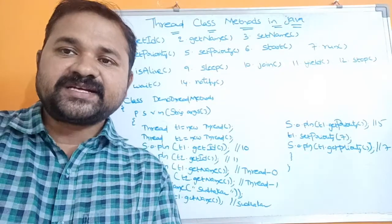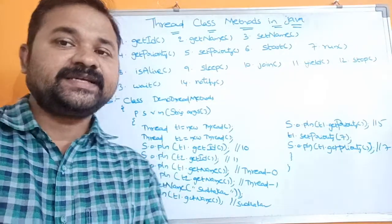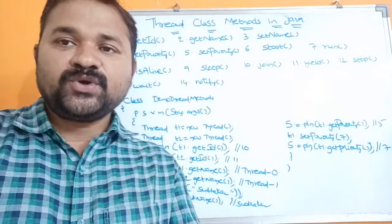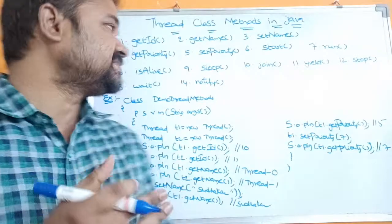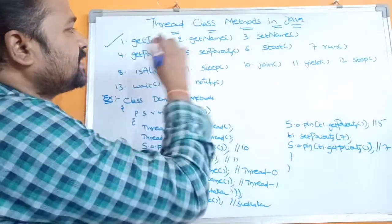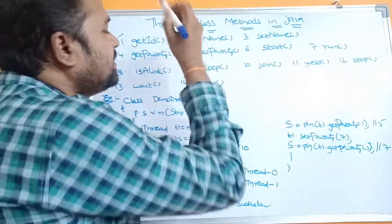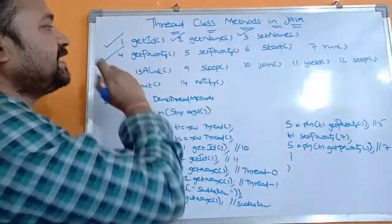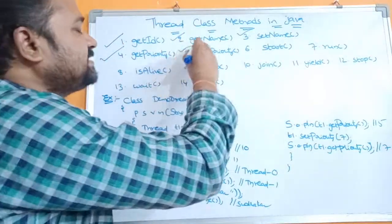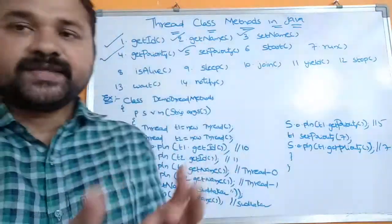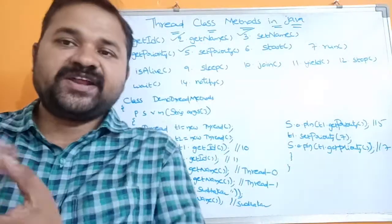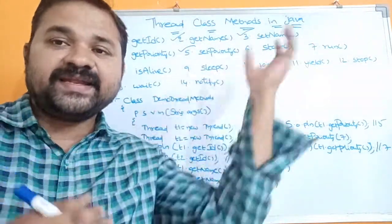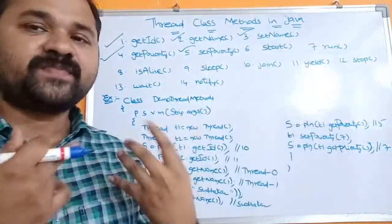So all these methods are present in Thread class. In this video we will discuss about getId method, getName method, setName method, getPriority method, and setPriority method. In the next videos we will see the remaining methods one by one.